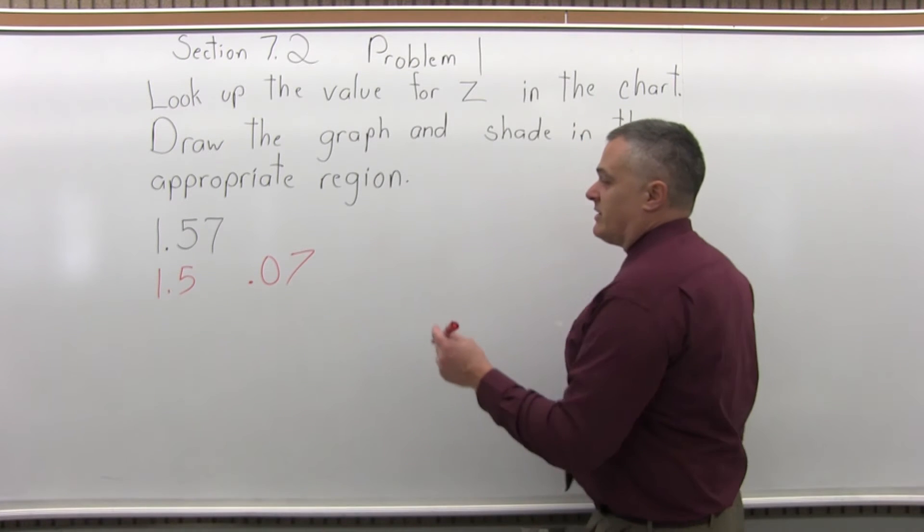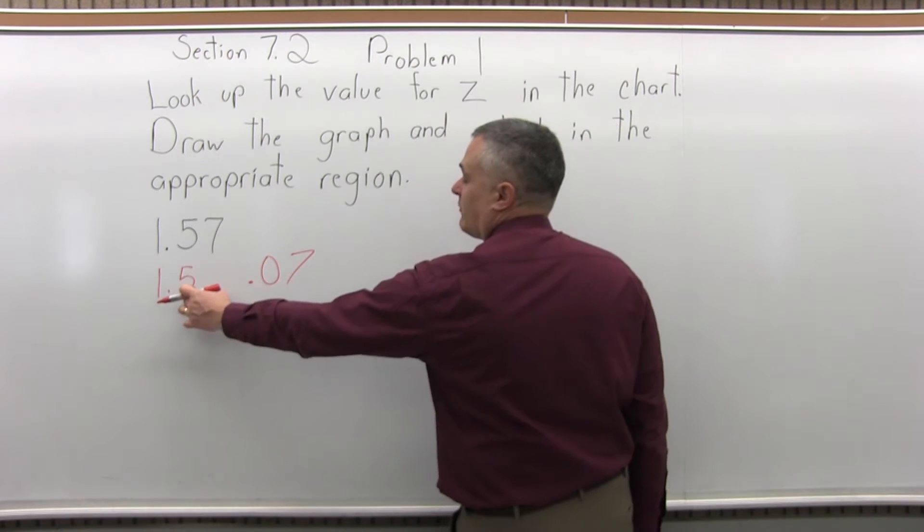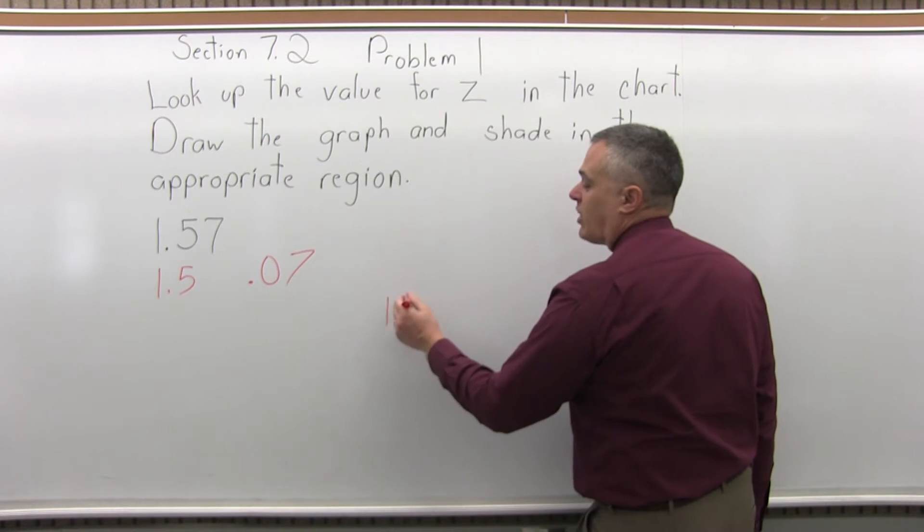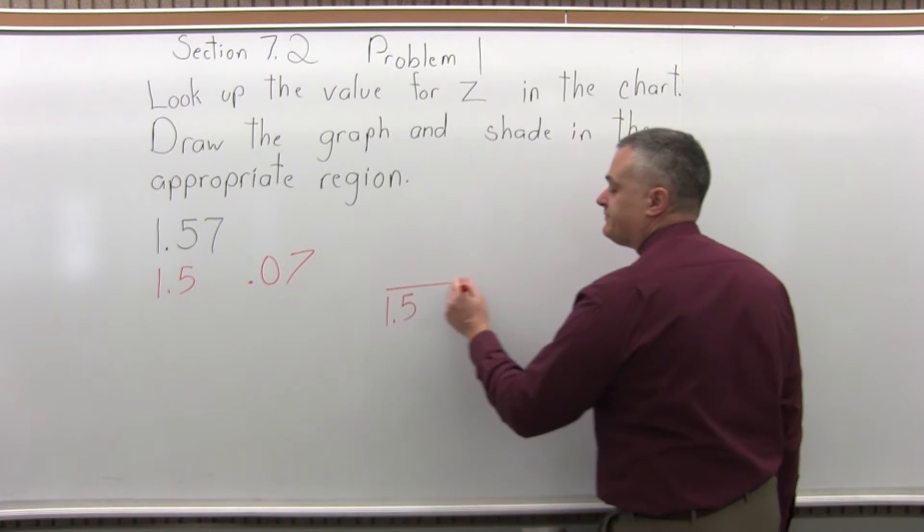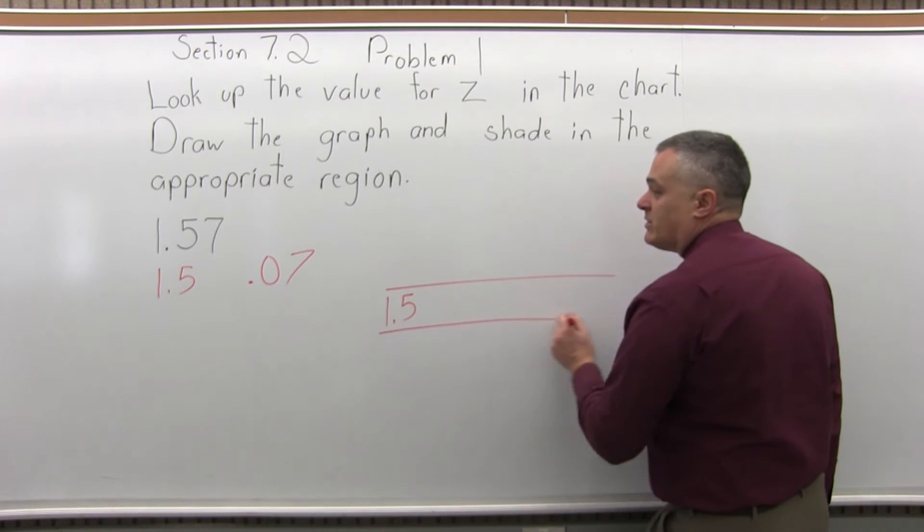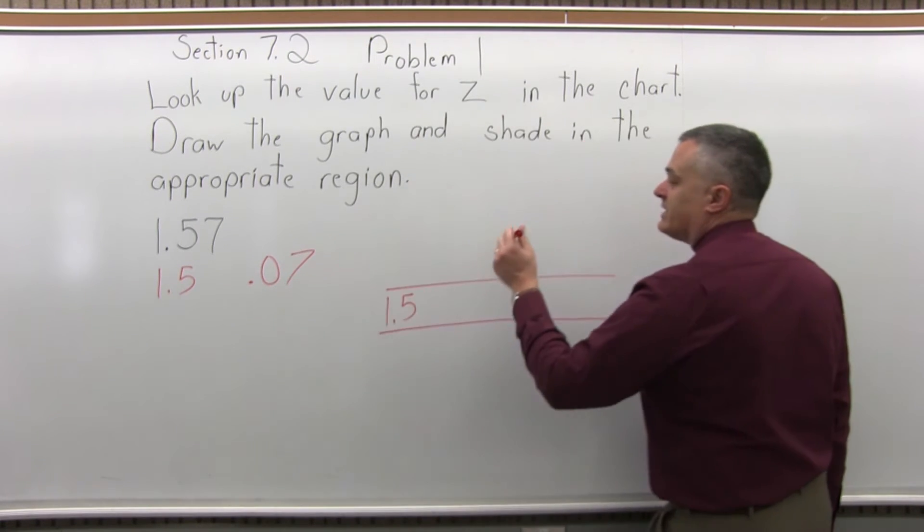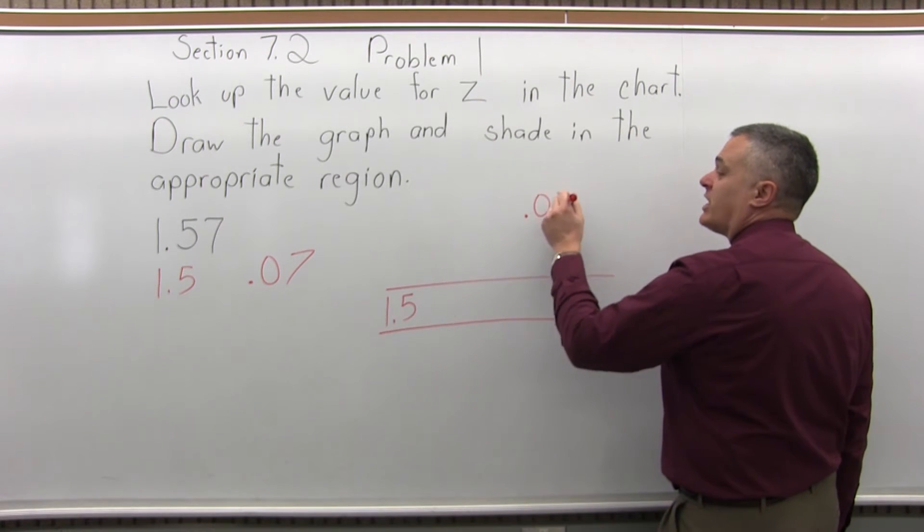Step 4: you go to the chart. The first digits are going to tell you what row of the chart you want to be in. And the rightmost digit with the .0 in front is going to tell you what column of the chart you want to be in.